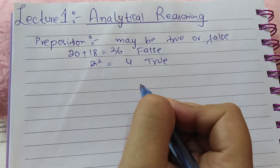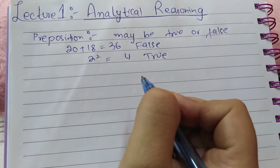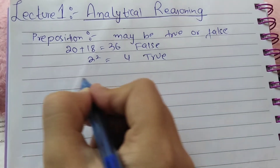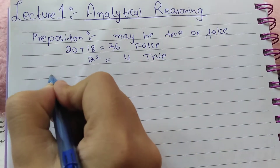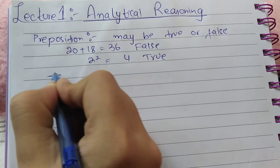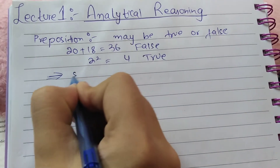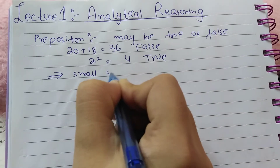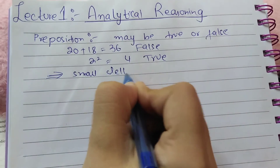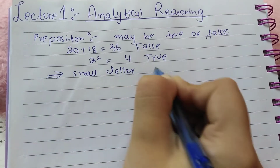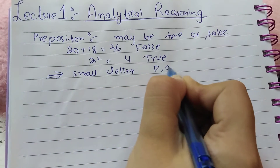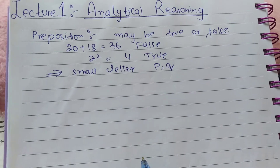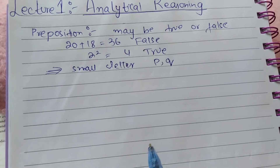Small letters are used to refer to propositions which are not specific, such as P or Q. Here we will discuss different types of propositions.